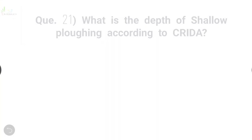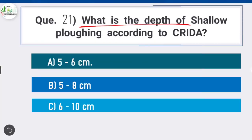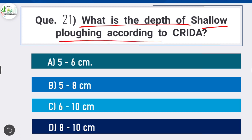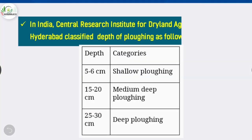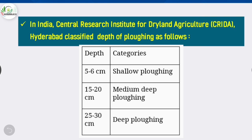Question 21: What is the depth of shallow plowing according to CRIDA? Option A is correct: 5 to 6 centimeters. In India, the Central Research Institute for Dryland Agriculture (CRIDA), situated in Hyderabad, classifies depth of plowing as follows: 5 to 6 cm is shallow plowing; 15 to 20 cm is medium plowing; and 25 to 30 cm is deep plowing.